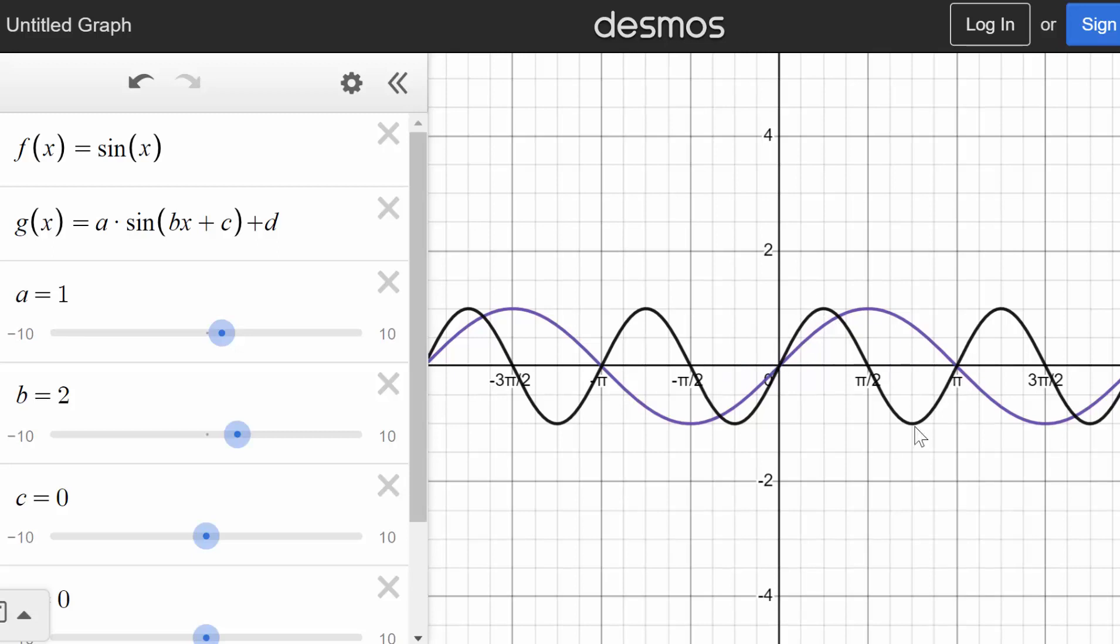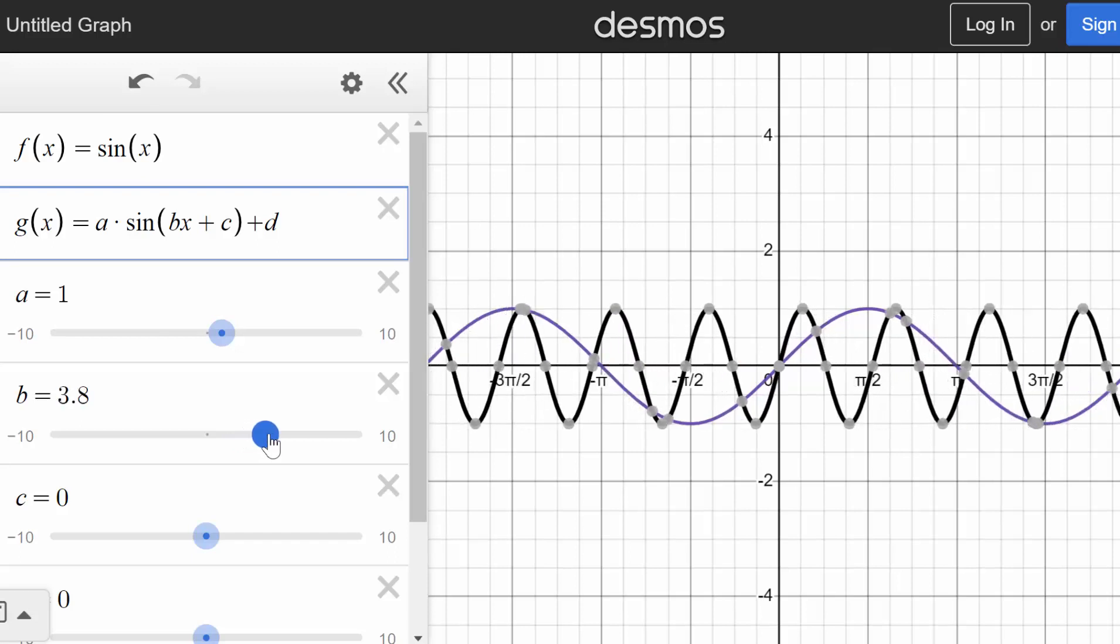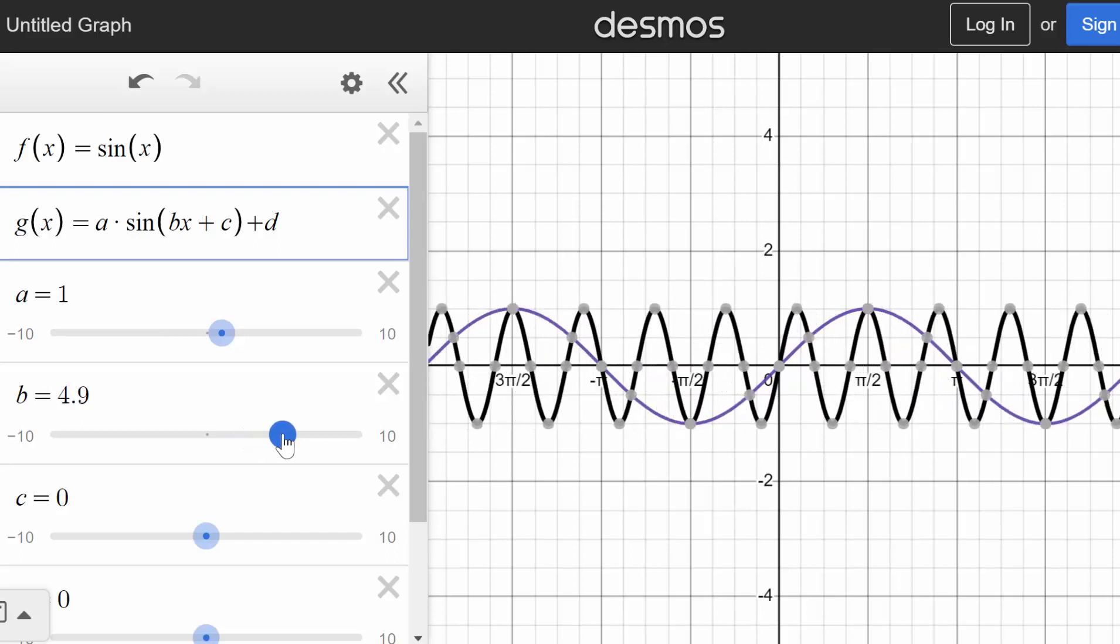Or in other words, its period is pi, whereas the period of the parent function goes all the way to 2 pi. And if we make b bigger and bigger, it just squishes the function in more and more.